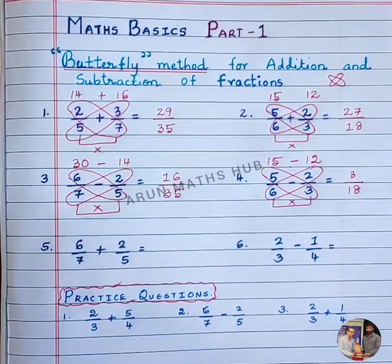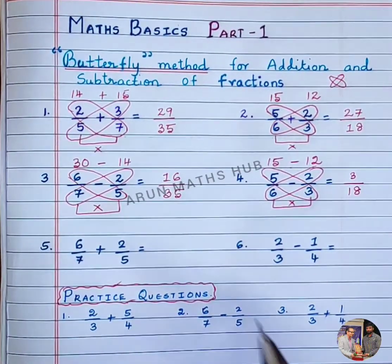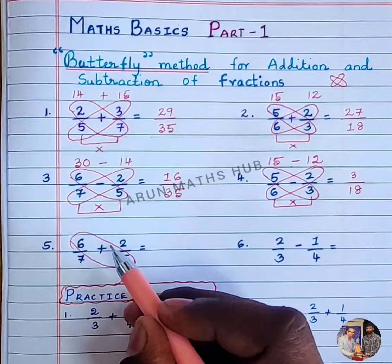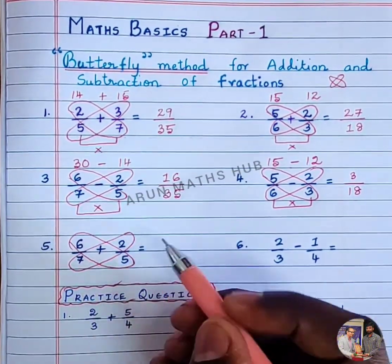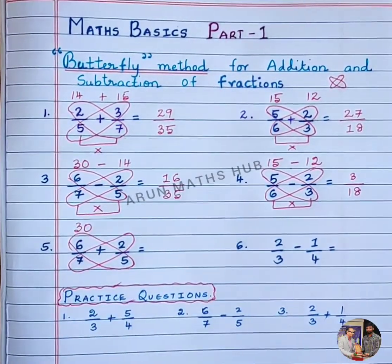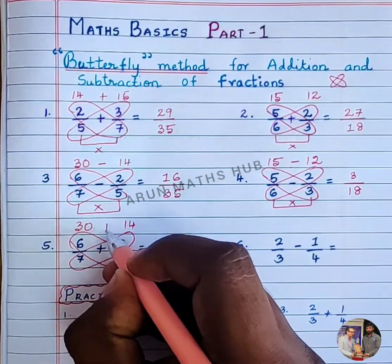can be used for any fraction. Now, 6 into 5: see, this is a very simple method. 6 into 5 is 30, 7 into 2 is 14. Now we need